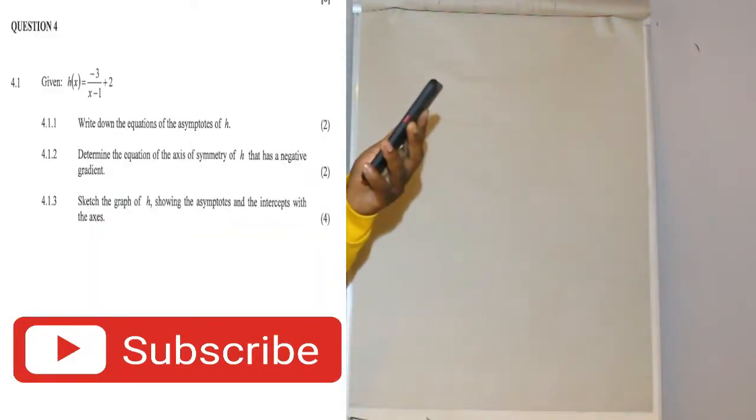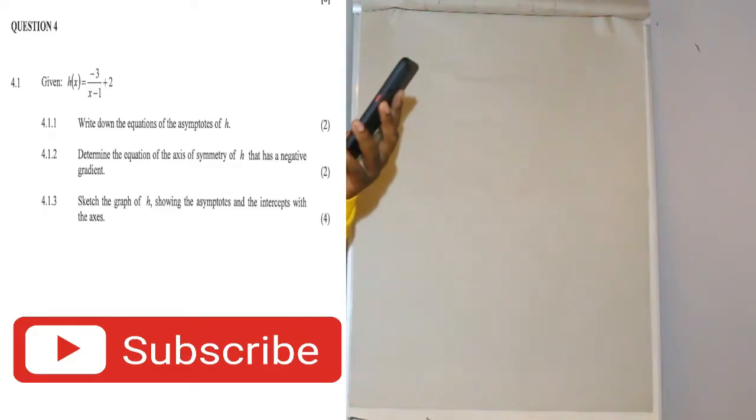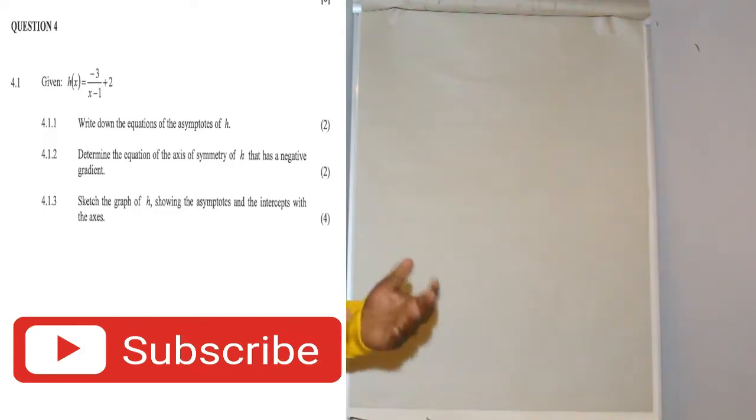Question 4.1.2: Determine the equation of the axis of symmetry of H that has a negative gradient. So a hyperbola has an axis of symmetry.